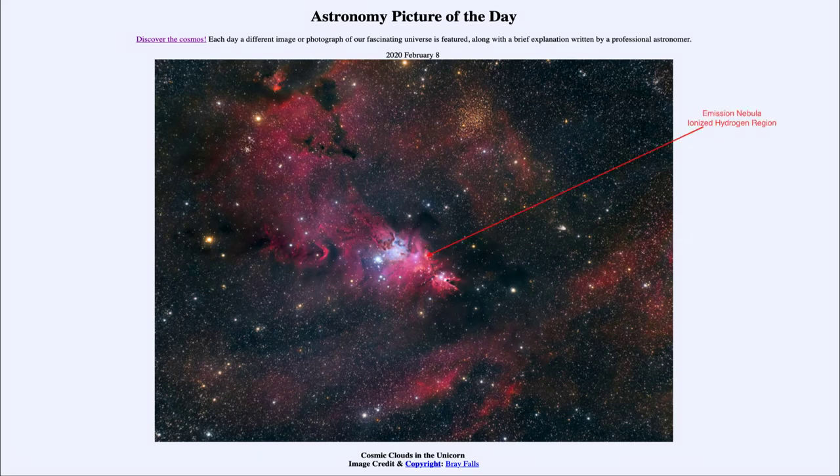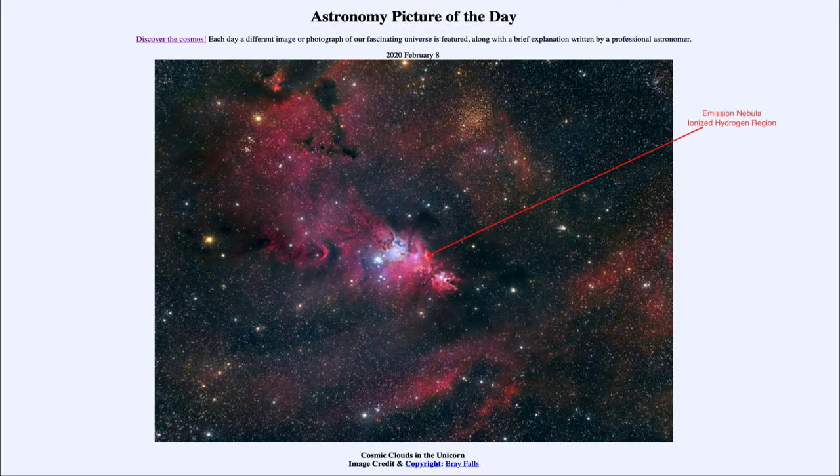Red emission nebulae occur when hydrogen gas is caused to glow. Ultraviolet radiation will excite the hydrogen gas, cause its electrons to be removed from it, and then as they recombine, it will give off very distinct colors. The prominent one in the visible portion of the spectrum is red light. So the red lines that we see are due to this.